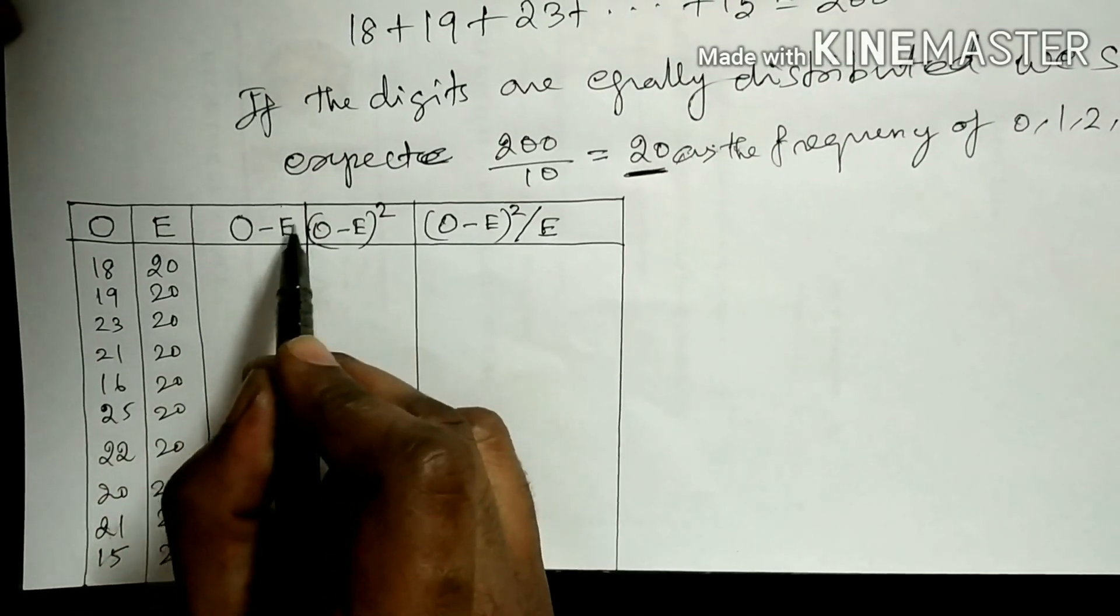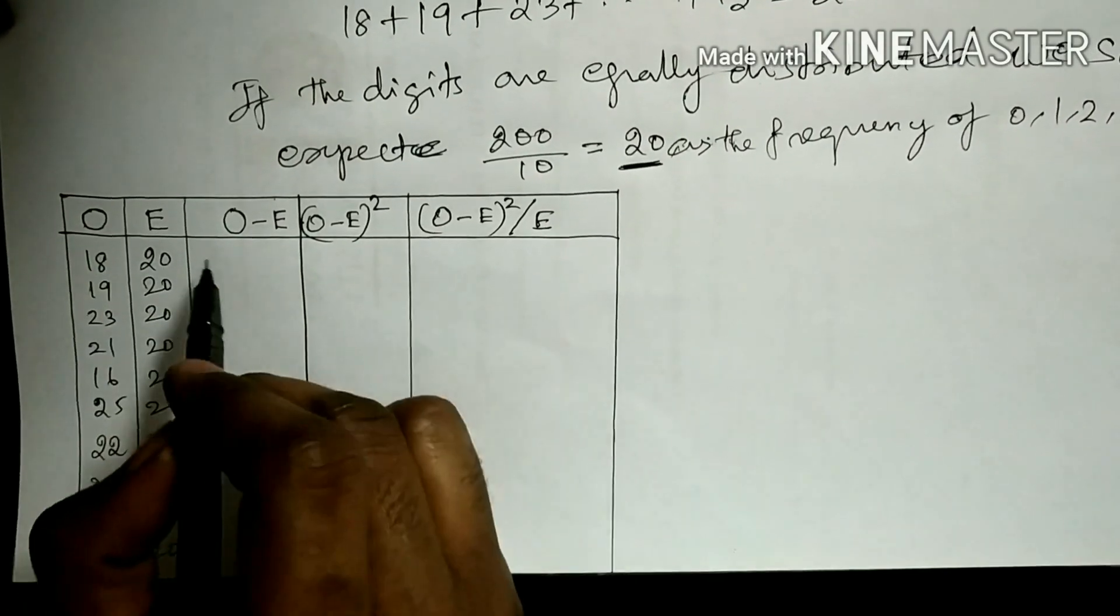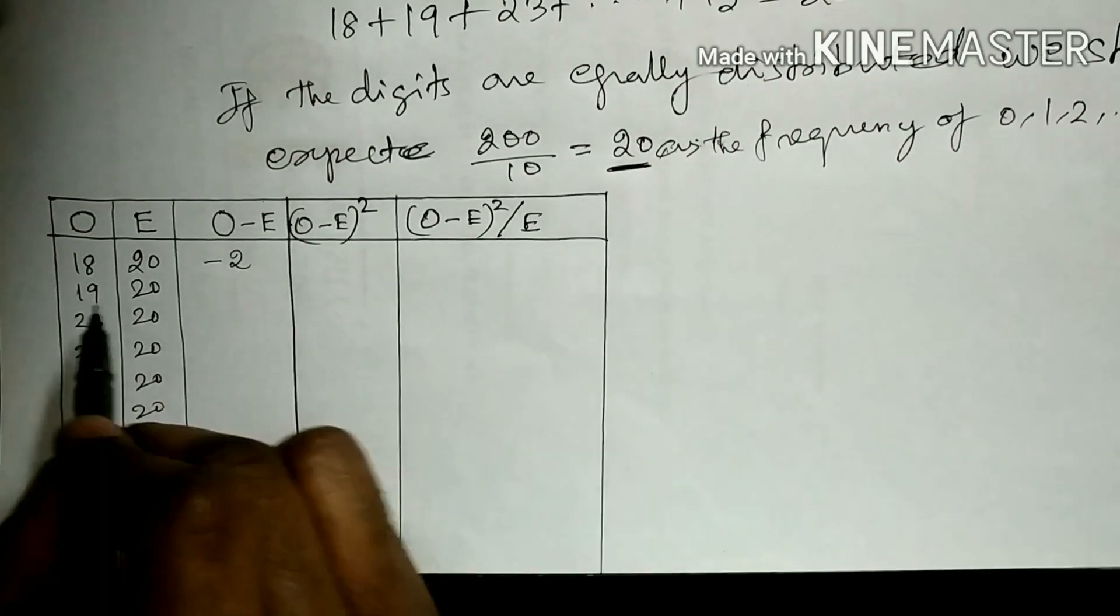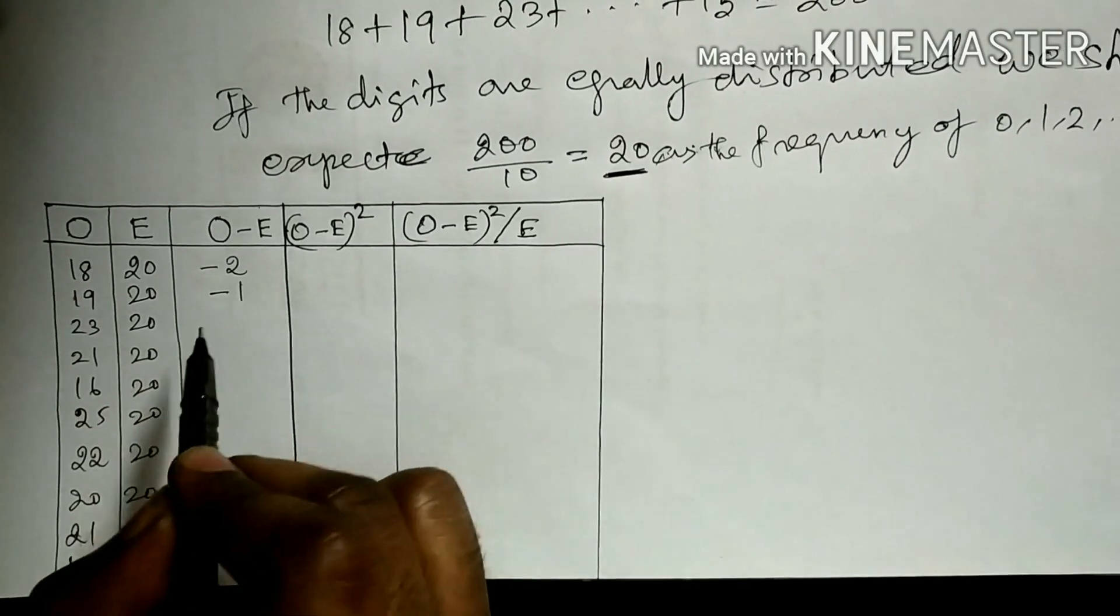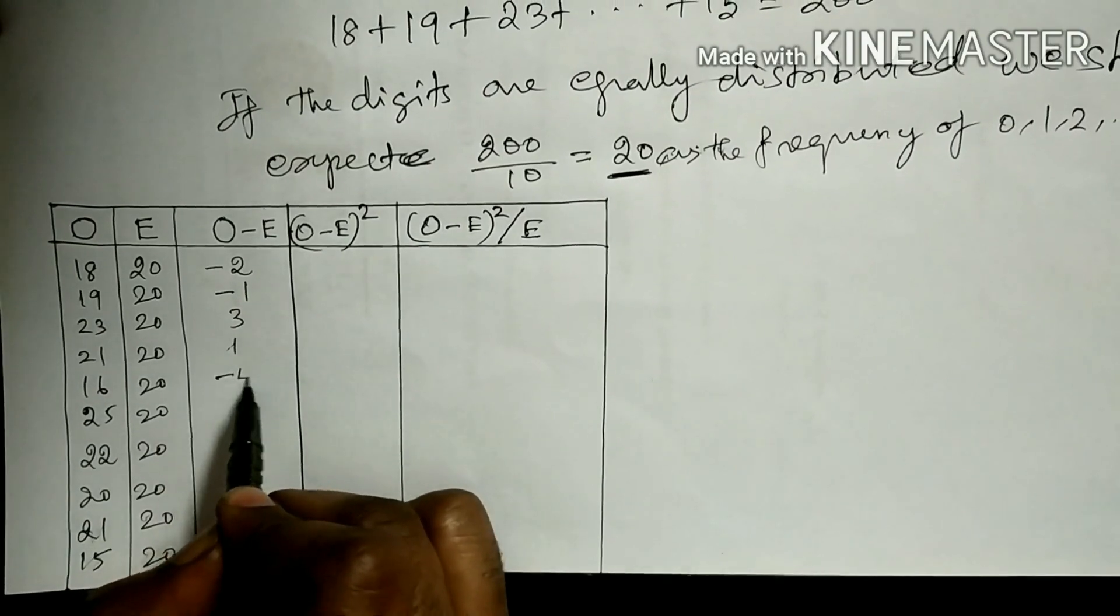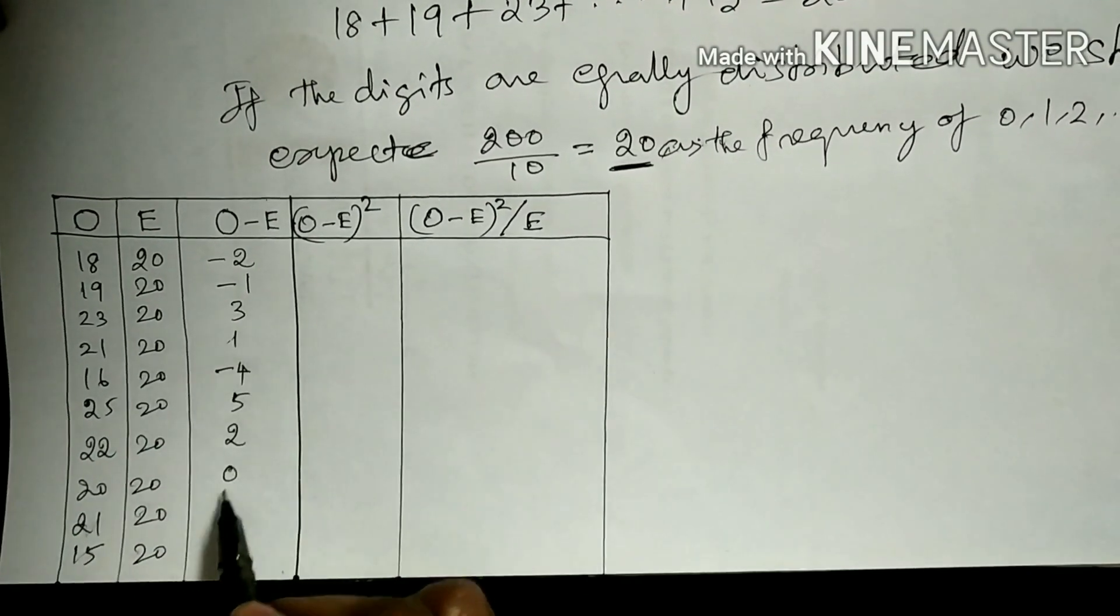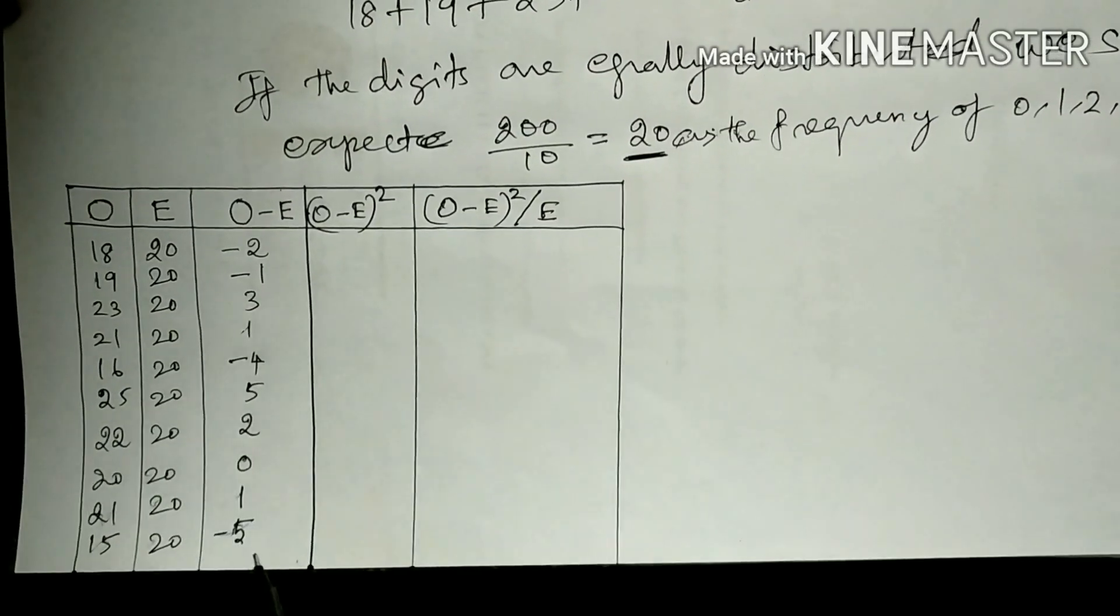Observed minus expected. Subtract these two. 18 minus 20 equals minus 2, 19 minus 20 equals minus 1, then minus 1, 1, minus 4, 5, 2, 0, 1, minus 5.